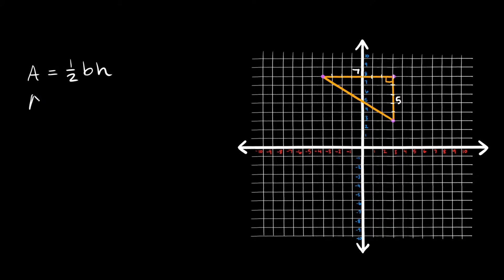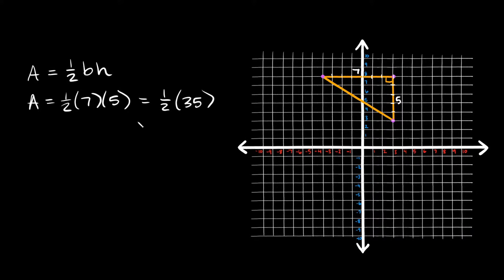Okay, so if we wanted to find the area, the area would be equal to one half the base, which is seven, times the height, which is five. So it'd be equal to one half times thirty-five, which is equal to seventeen point five. And whatever units you're using, they would be squared — so seventeen point five units squared.